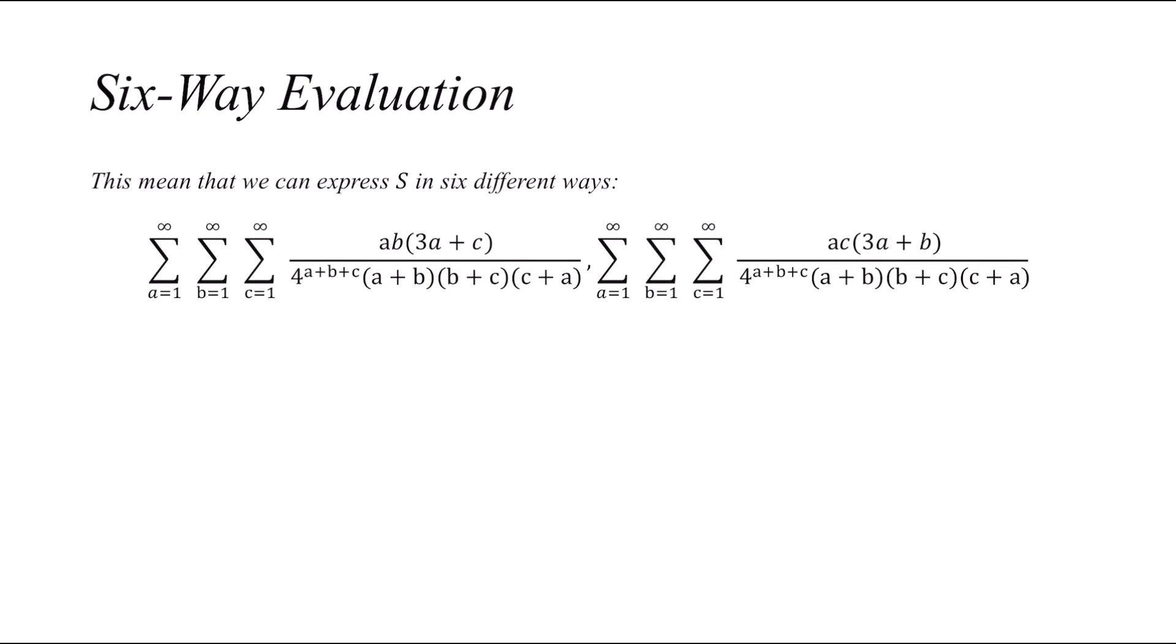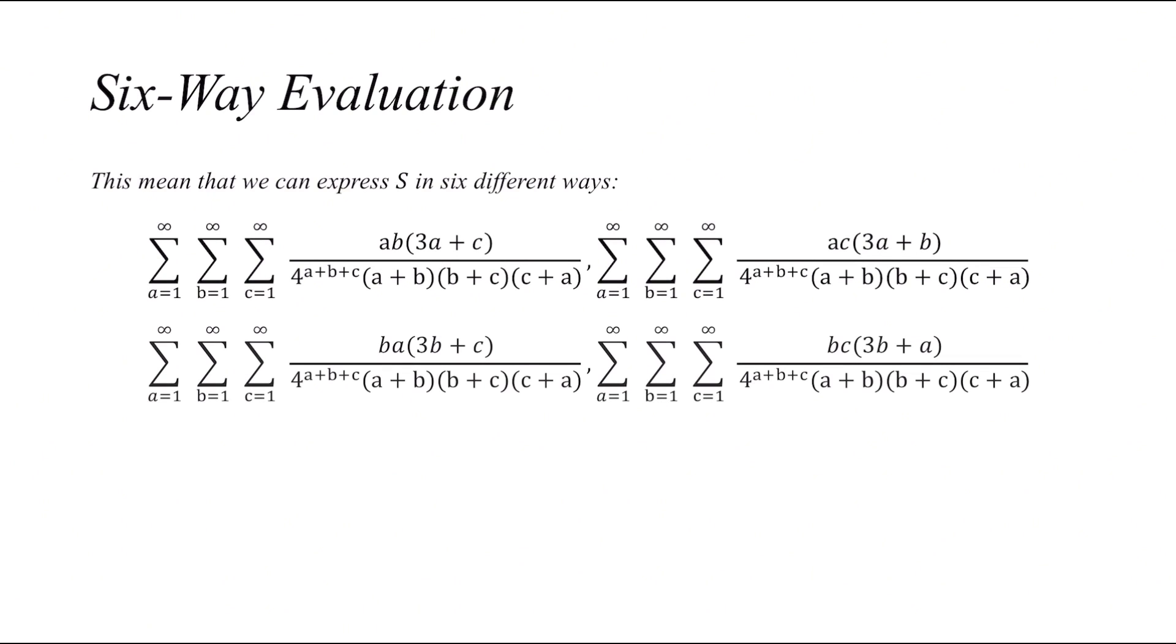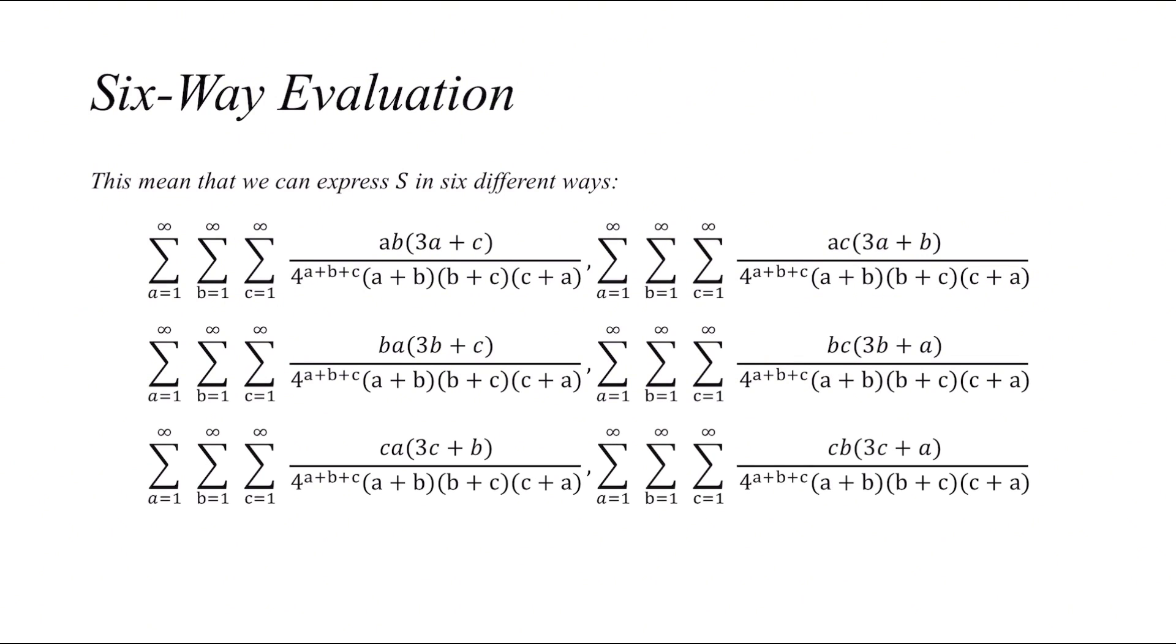So since the numerator is not symmetric, and we could use these kind of permutations to make it one, we could evaluate S in six different ways. Notice they are just permutations of ABC. The denominator will always stay the same, because it's symmetric, even if we switch ABCs around with different permutations. And we could add the numerators together to make the expression symmetric.